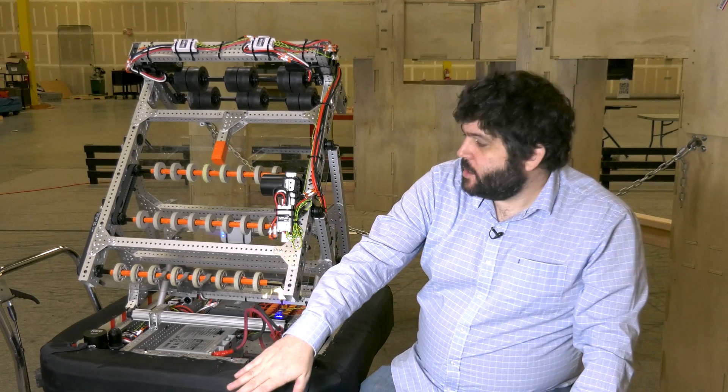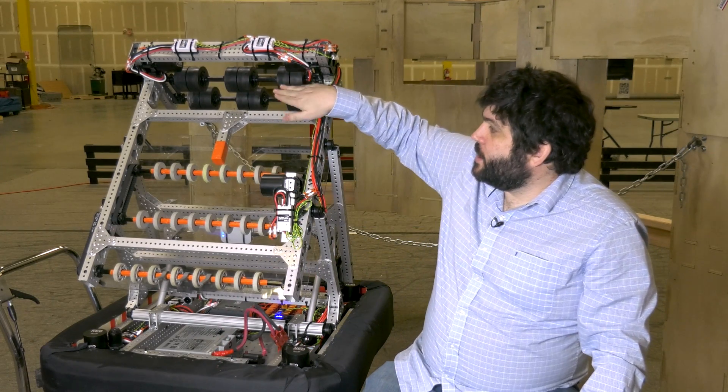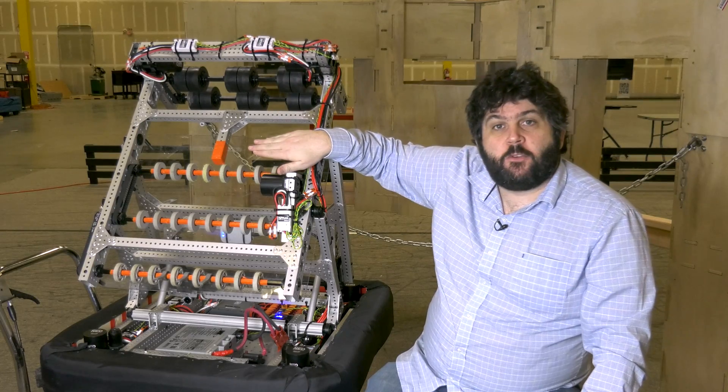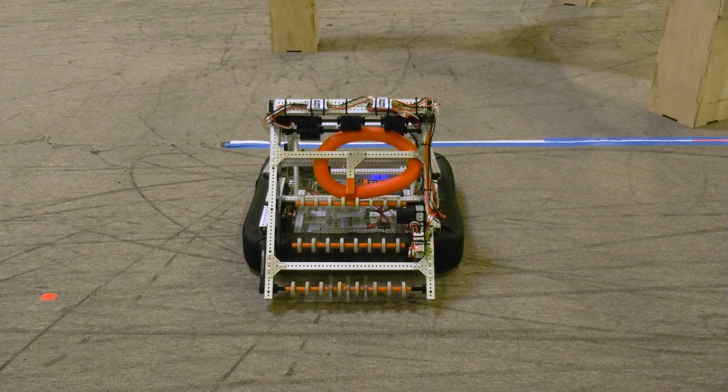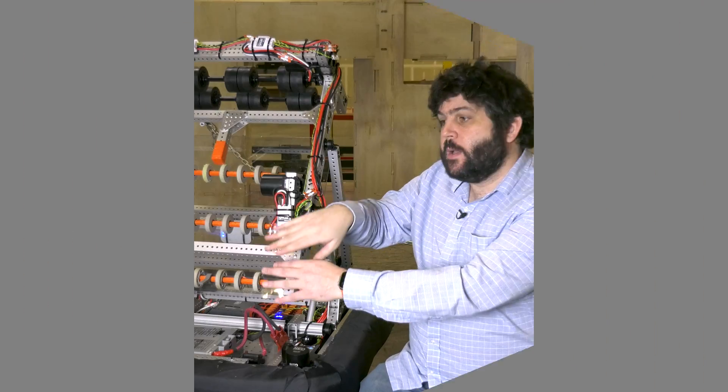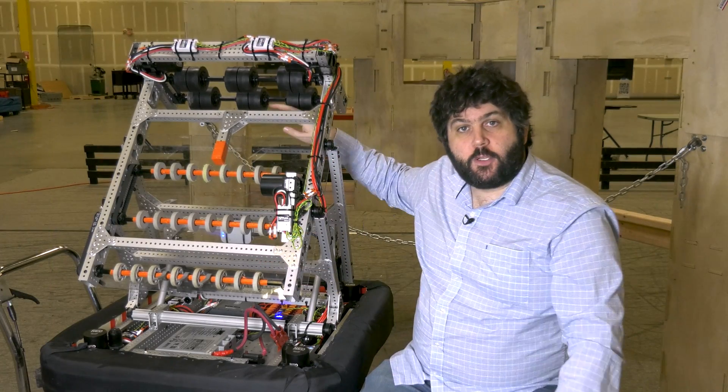When intaking a game piece, it intakes it all the way up to these wheels, and then it backs it down just a little bit so that we're using the same system to both intake off the floor, but also as the feeder to the shooter itself.